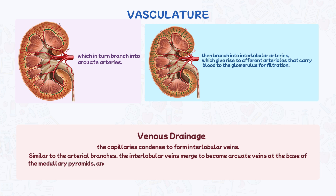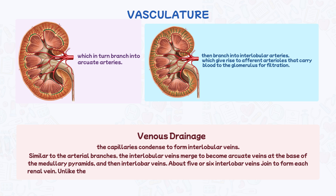These then become interlobar veins; about five or six interlobar veins join to form each renal vein. Unlike the arterial branches, the tributaries of the renal vein communicate with each other.